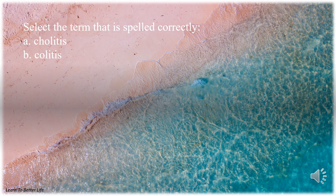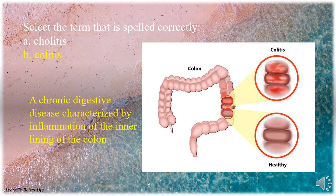Select the term that is spelled correctly. A. Colitis with an H. B. Colitis with a C. The answer is B. Colitis with a C.